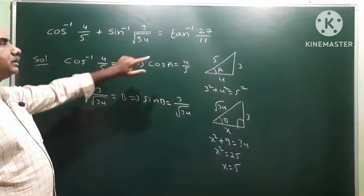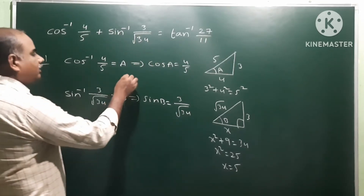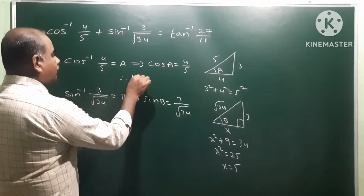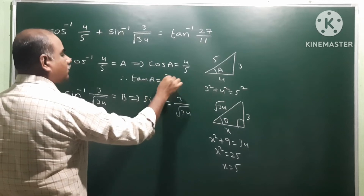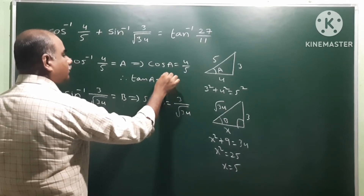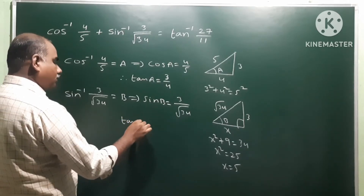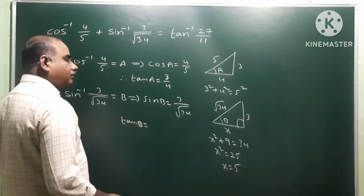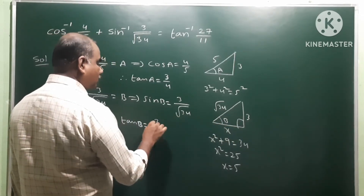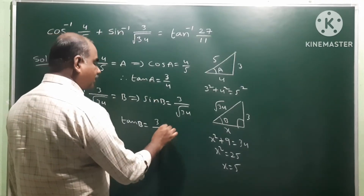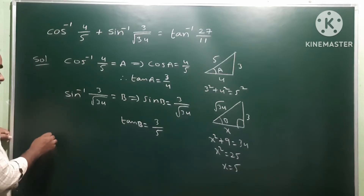Now we need the tan a and tan b values. Tan a equals opposite by adjacent, which is 3 by 4. Tan b equals opposite by adjacent, which is 3 by 5. So these are the values of tan a and tan b.